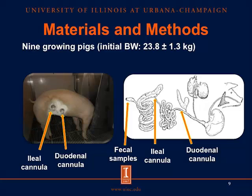We used 9 growing pigs with an initial body weight of 23.8 kilograms, and the pigs were surgically equipped with T-cannulas, one in the duodenum and the other in the ileum. The duodenal cannula was placed 10 centimeters after the pancreatic duct, and the ileal cannula was placed at the end of the ileum. We also collected fecal samples. So, by collecting duodenal, ileal, and fecal samples, we were able to calculate duodenal, ileal, and total tract digestibilities.